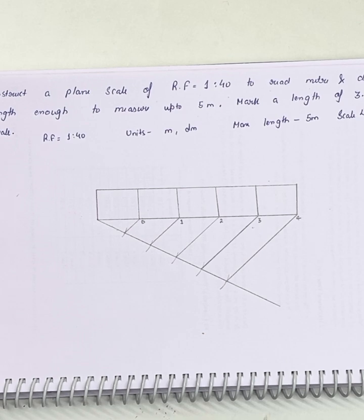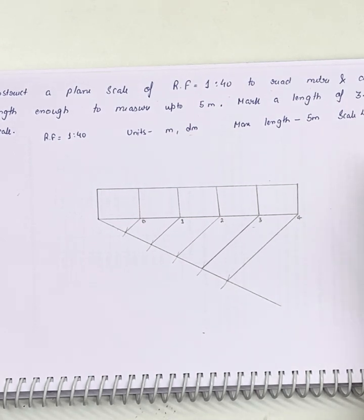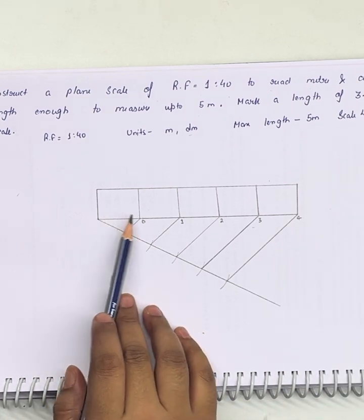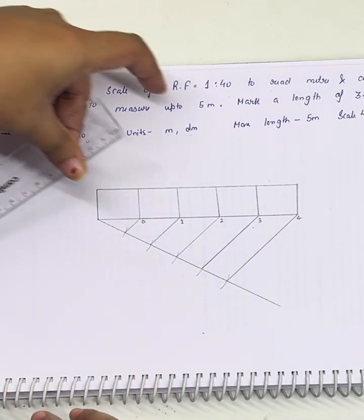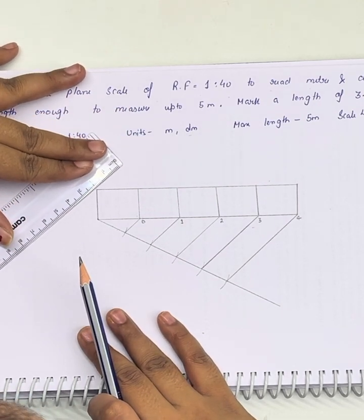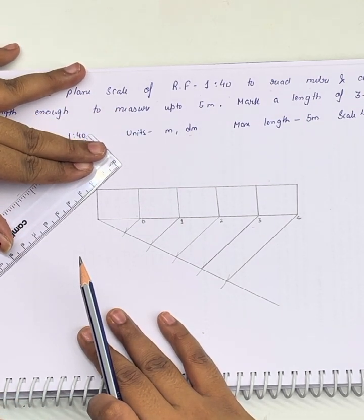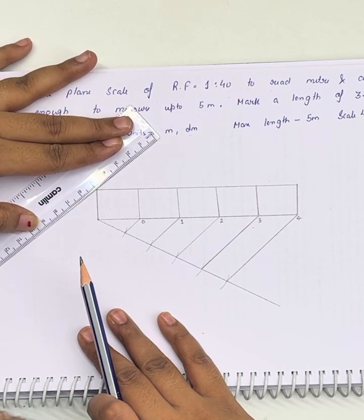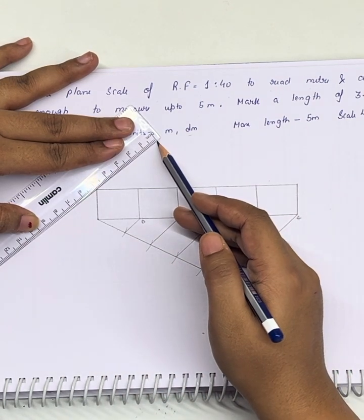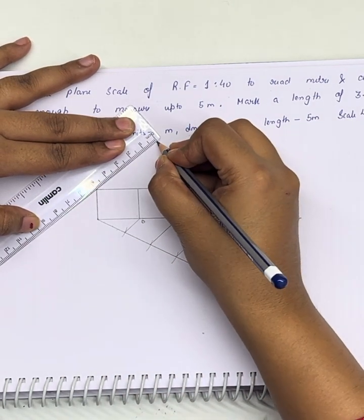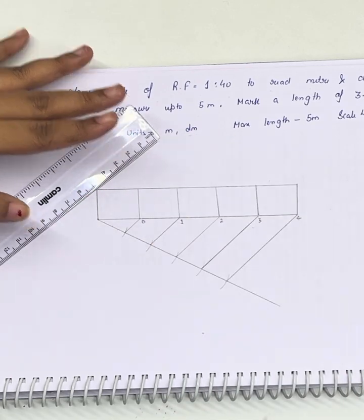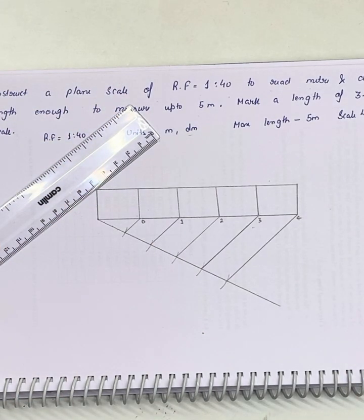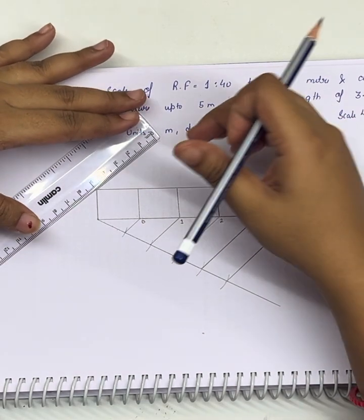We need to draw another unit, that is decimeter. Since one meter is equals to 10 decimeters, so we will be dividing this in 10 equal parts. For that, let's draw a line of 5 centimeters at any length. Dividing 5 centimeters in 10 equal parts will be giving one part of 0.5 centimeters, that is 5 mm. So we will be marking that distance over here.